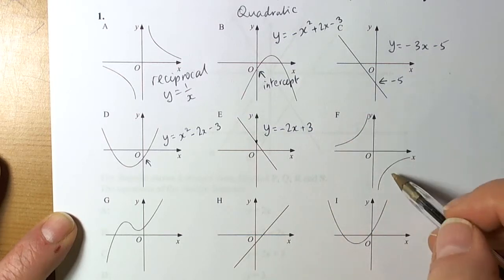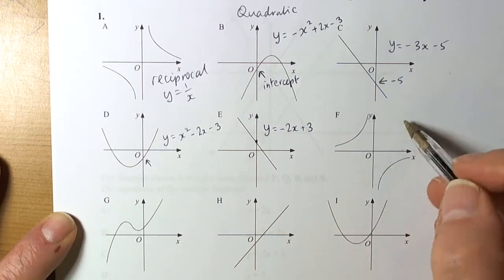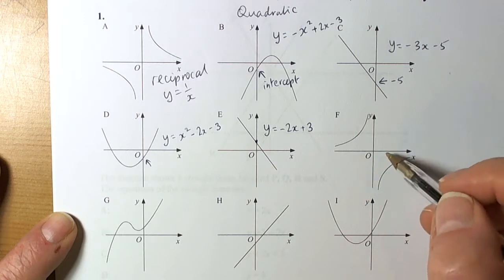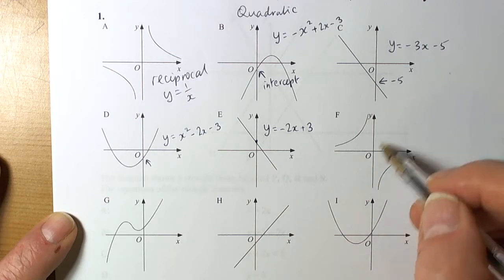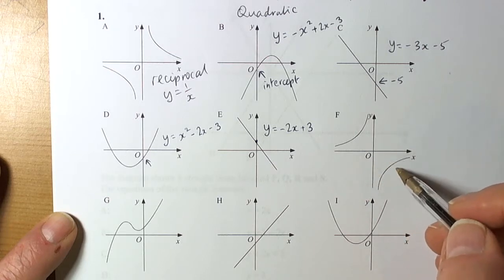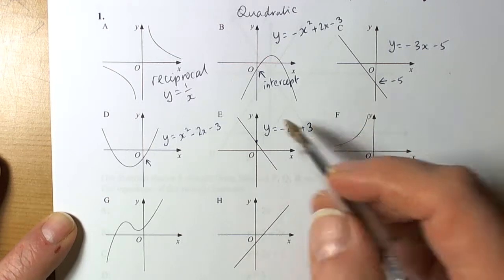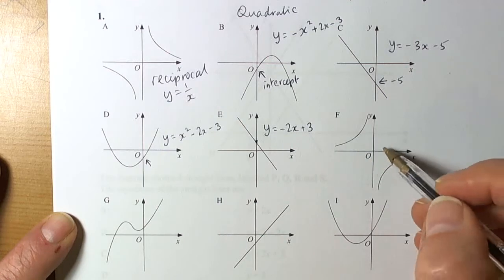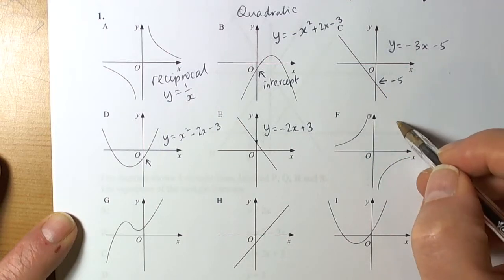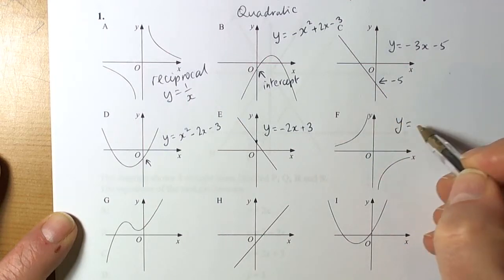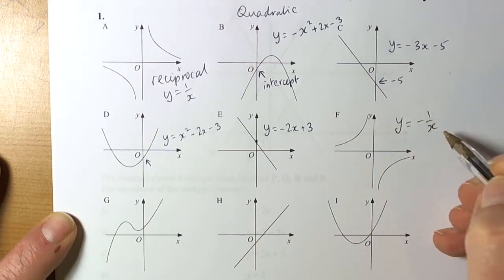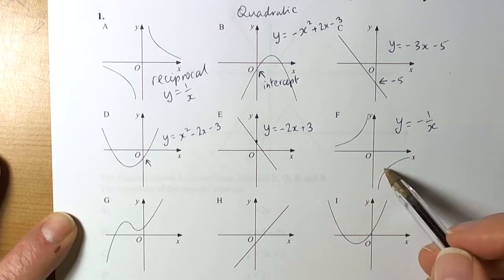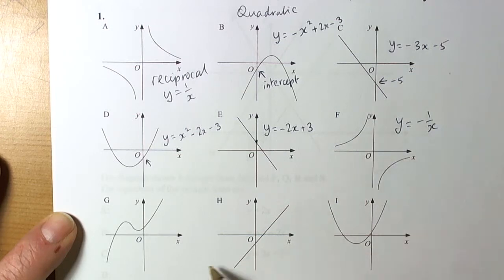Something else has caused it to move away from the y-axis. A straight line in the negative direction is going to be y equals negative 2x, going through a positive intercept — so plus 3. This next one is a split graph, the reciprocal hyperbola, but this time it's the reflection of graph A, so it's going to be y equals negative 1 over x.